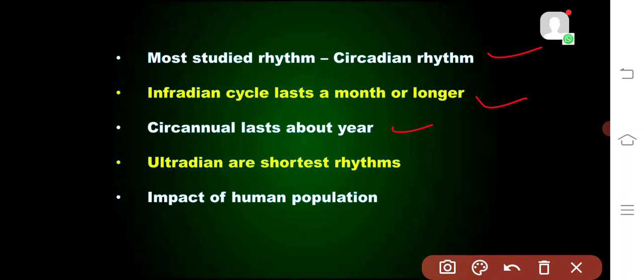The shortest cycles are the ultradian, where the cycles are less than 24 hours. Heart rate and breathing are two examples of ultradian biological rhythms. Some biological rhythms occur more than once a day and are called ultradian rhythms. The release of hormones from the male pituitary gland of mammals occurs about every one to two hours during the day.